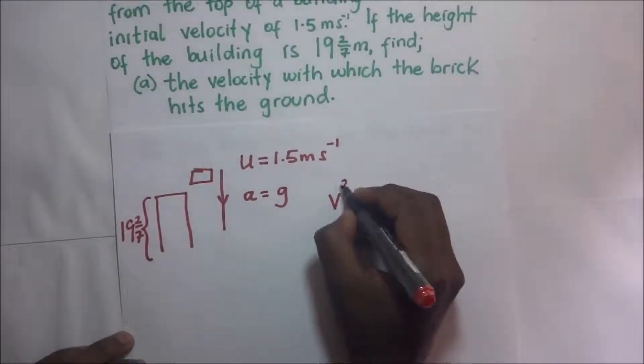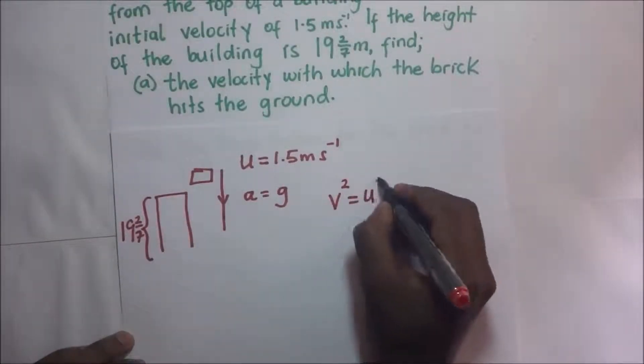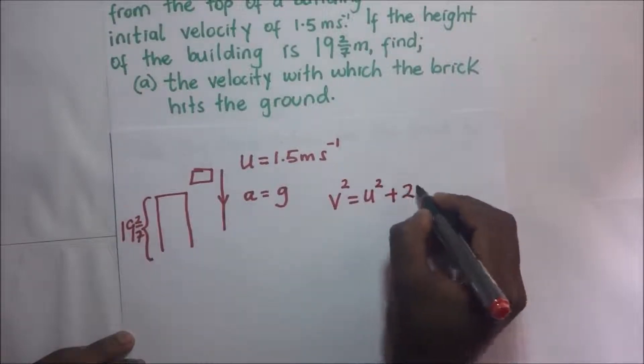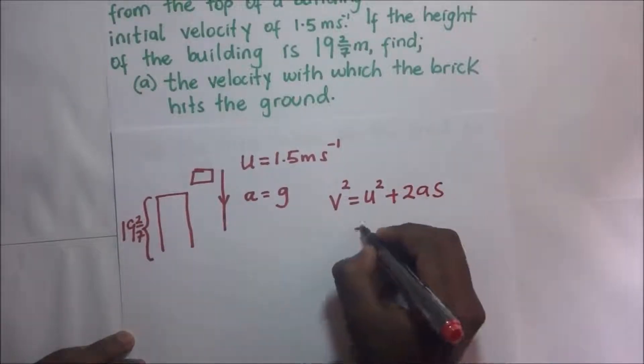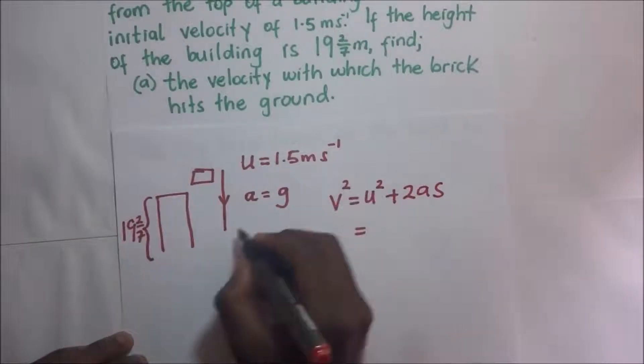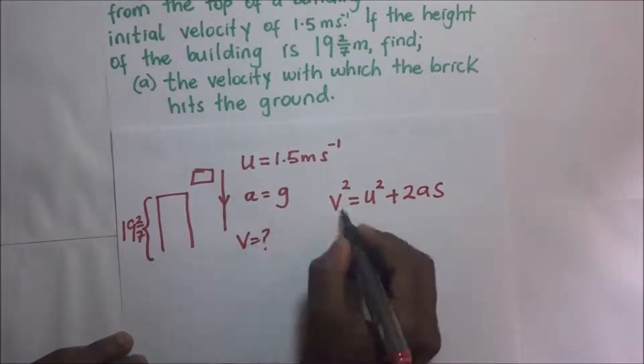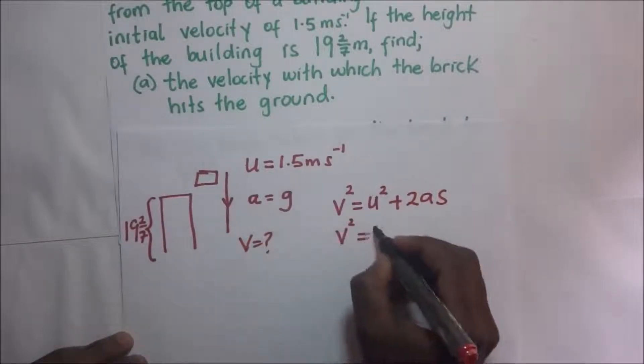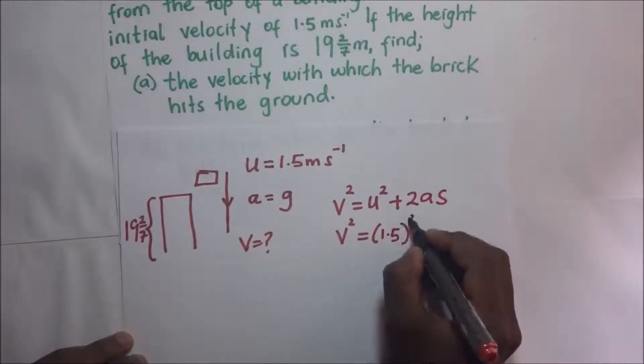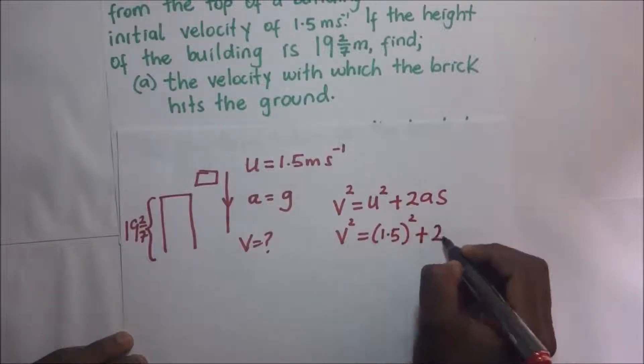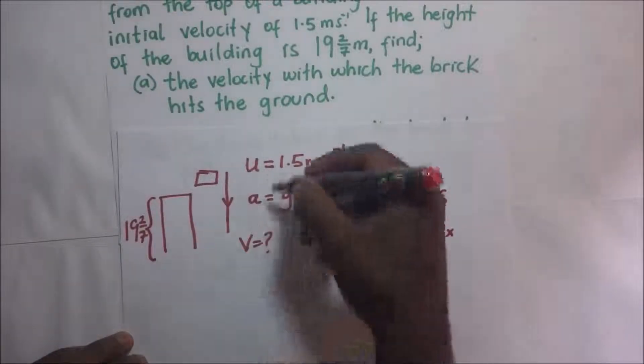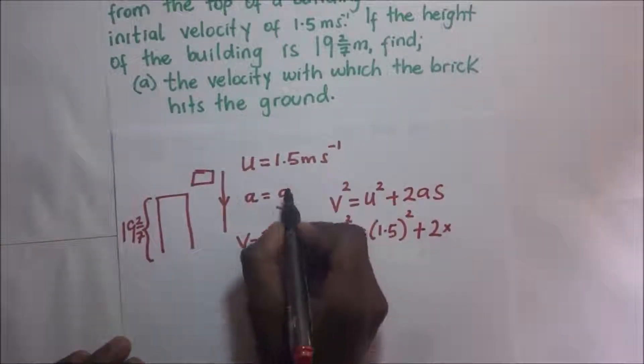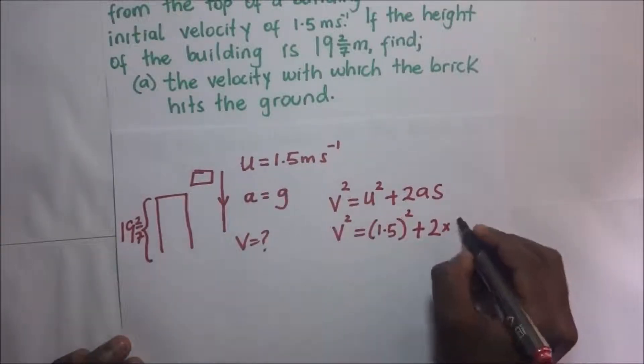So it means the velocity with which it hits the ground: v² is going to be equal to u² + 2as. So the final velocity with which it hits the ground is what we are looking for. We shall call that v² equal to u², which is 1.5 squared, plus